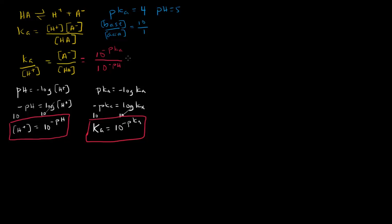So when we do that here, we should get, so this would be 10 to the negative pKa. The pKa is 4, so we have 10 to the negative 4 over 10 to the negative 5, and we get then is 10 to the 1, which is 10 over 1. So we get that same exact answer.